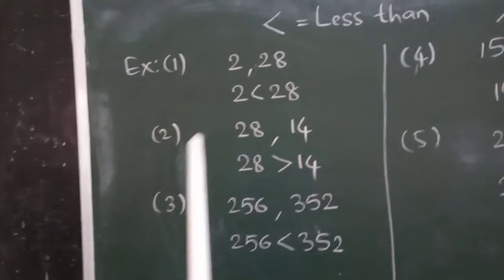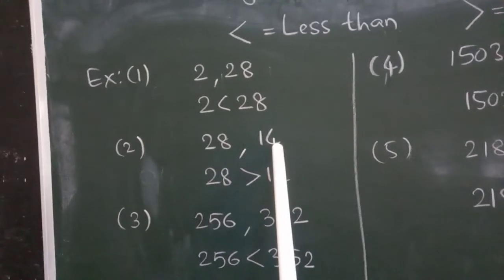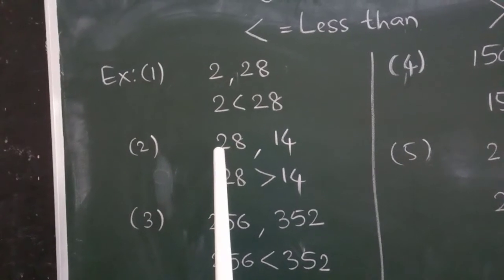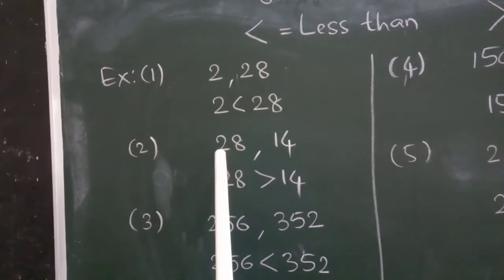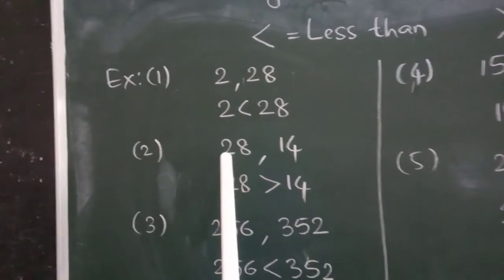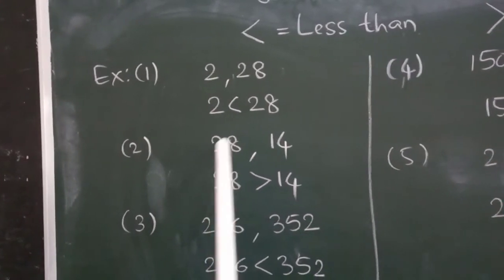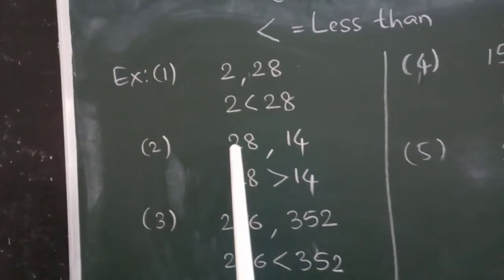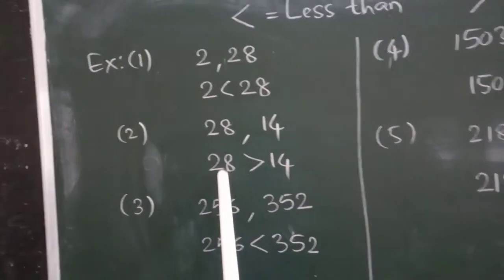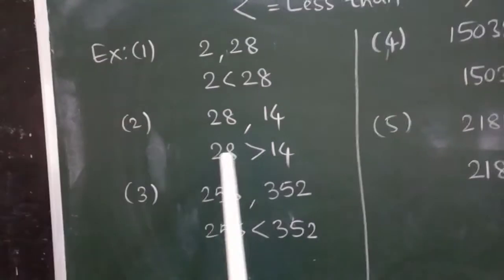And the second example, 28 and 14. 28 is also 2-digit number. 14 is also 2-digit number. So, how can you compare which is the bigger? Which is the biggest place value here? 10's place. Here also 10's place. So, 10's place has 2 here and 1 here. So, this is the bigger number. 28 is greater than 14. We should take this symbol. So, 28 is greater than 14.